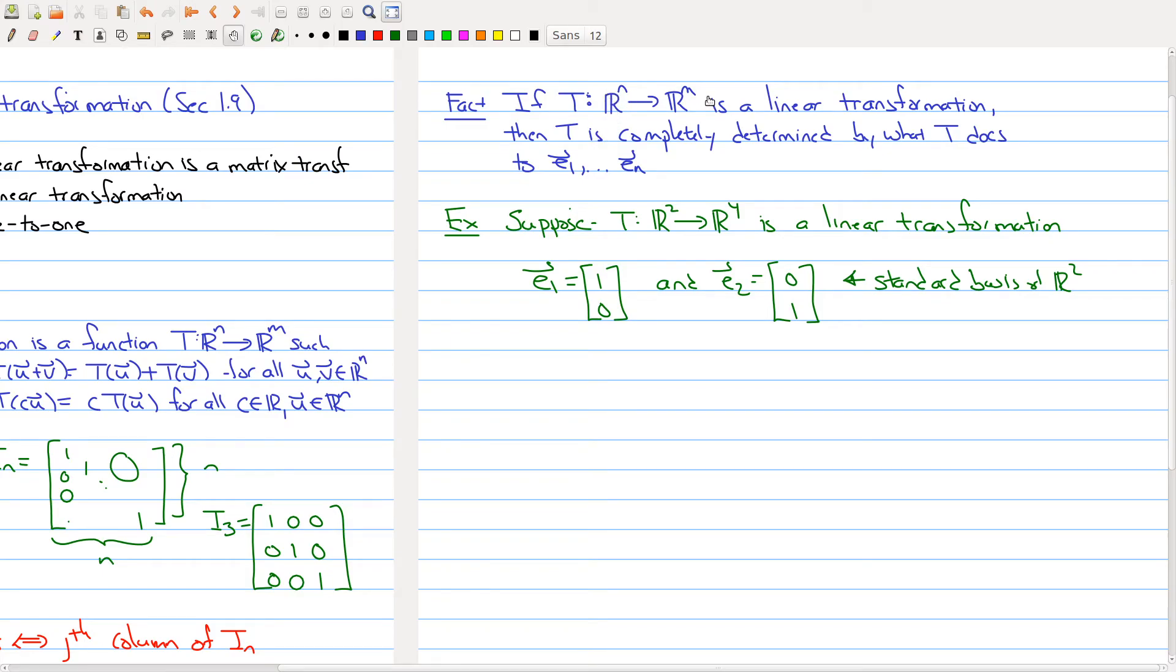So I have an example here to help illustrate this notion. Suppose somebody says T is a linear transformation from R² to R⁴. And because we're looking at our domain as R², we need the standard basis of R², which contains e₁, which is (1, 0), and e₂, which is (0, 1). And this person who hands me my linear transformation tells me the following facts.